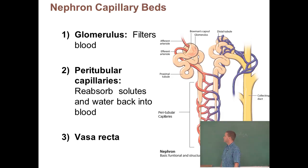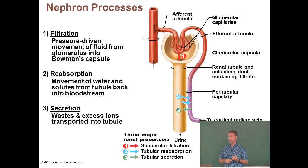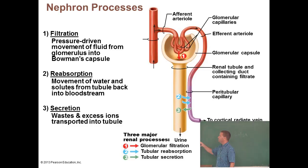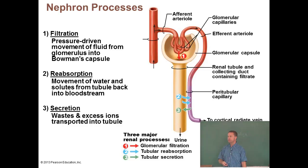Three things a nephron does: filtration, reabsorption, and secretion. Filtration is the pressure-driven movement of fluids from the capillary bed into the Bowman's capsule. These capillaries are leaky — water and salts tend to leak out, whereas red blood cells and white blood cells don't. If we start to see blood in the filtrate, it could mean we have kidney problems.